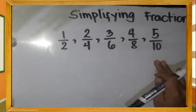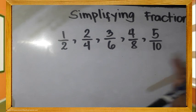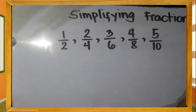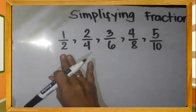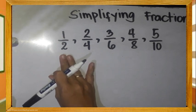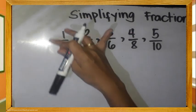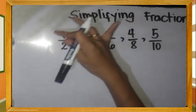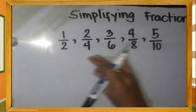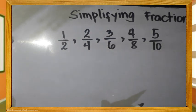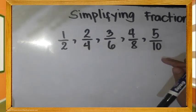Sa mga proper fraction na nandito sa ating example, alin dito ang simplest form o naka-simplify? Ito ay ang one-half. One-half ang pinaka-maliit na o simpleng form ng fraction kumpara sa mga numerong kanyang kasama rito.